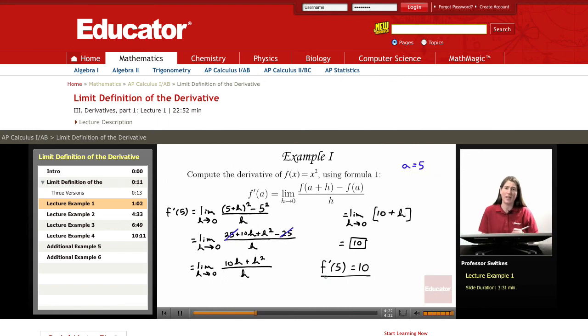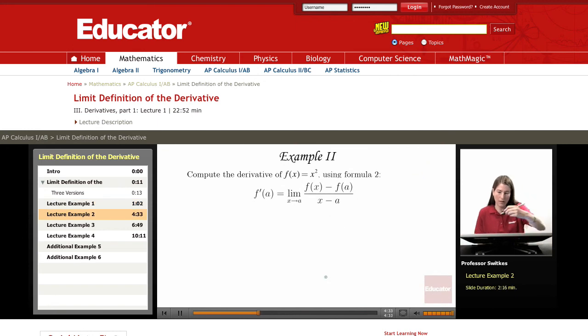Now let's look at the same function and evaluate its derivative at the same point, but using formula 2. Here's an alternative formula for computing the same derivative. Again, let a = 5, so we're computing f'(5) by this different looking formula to get the same result. We have the limit as x approaches 5.